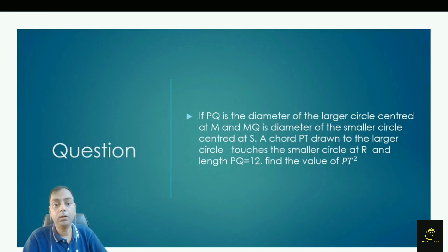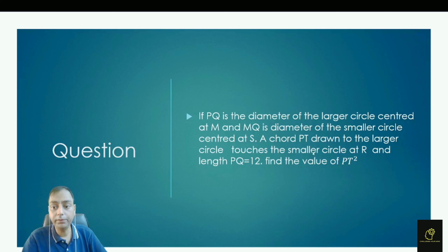Hello students. In this video I am going to discuss a question from the topic of circles. The question is: if PQ is the diameter of the larger circle centered at M, and MQ is the diameter of the smaller circle centered at S, a chord PT drawn to the larger circle touches the smaller circle at R, and PQ is equal to 12. We need to find the value of PT squared.